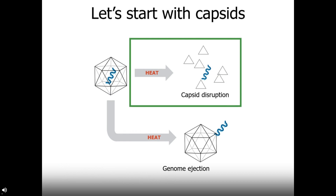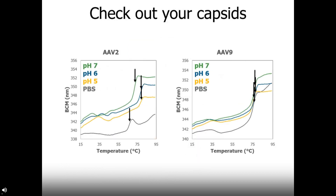Starting with capsid stability and protein unfolding: on the left we have AAV2, and on the right we have AAV9. We're checking out exactly when proteins start to unfold in response to increased thermal stress. With AAV2, starting with PBS at pH 7.4, we see the earliest unfolding of capsid proteins — and as pH becomes more acidic, protein unfolding occurs at progressively later temperatures, covering quite a large spread. Meanwhile, for AAV9 at those same four pHs, unfolding occurs at very high temperatures, and the values are very closely bunched together — very different behavior based on serotype.